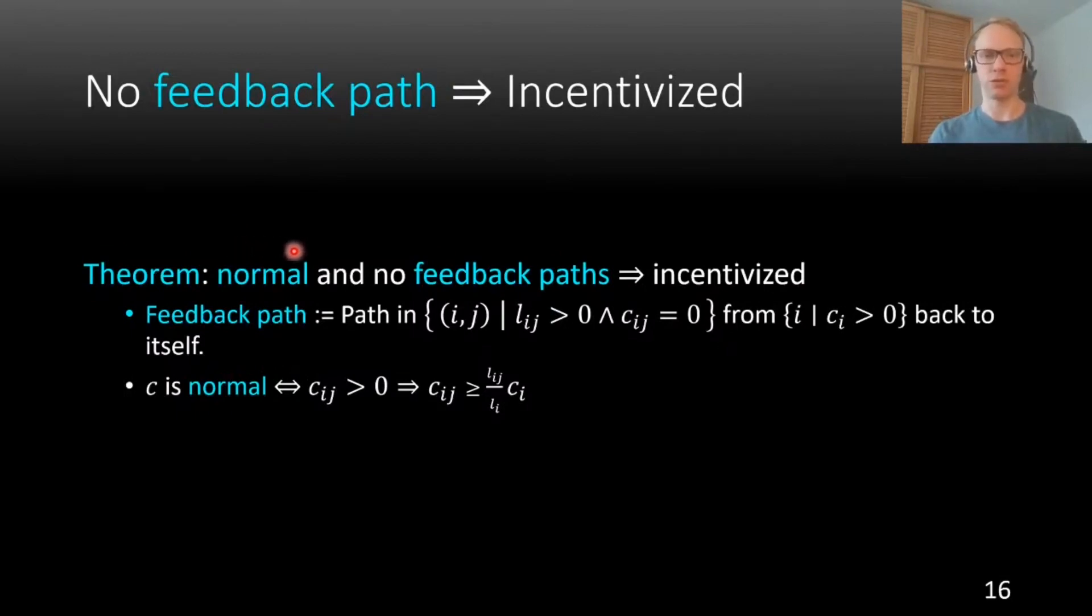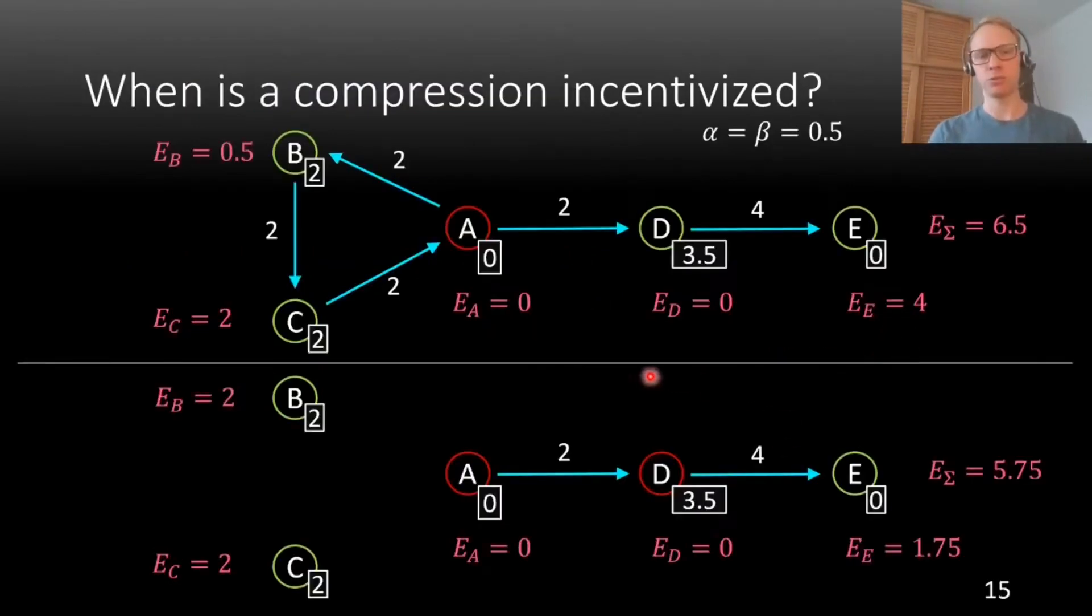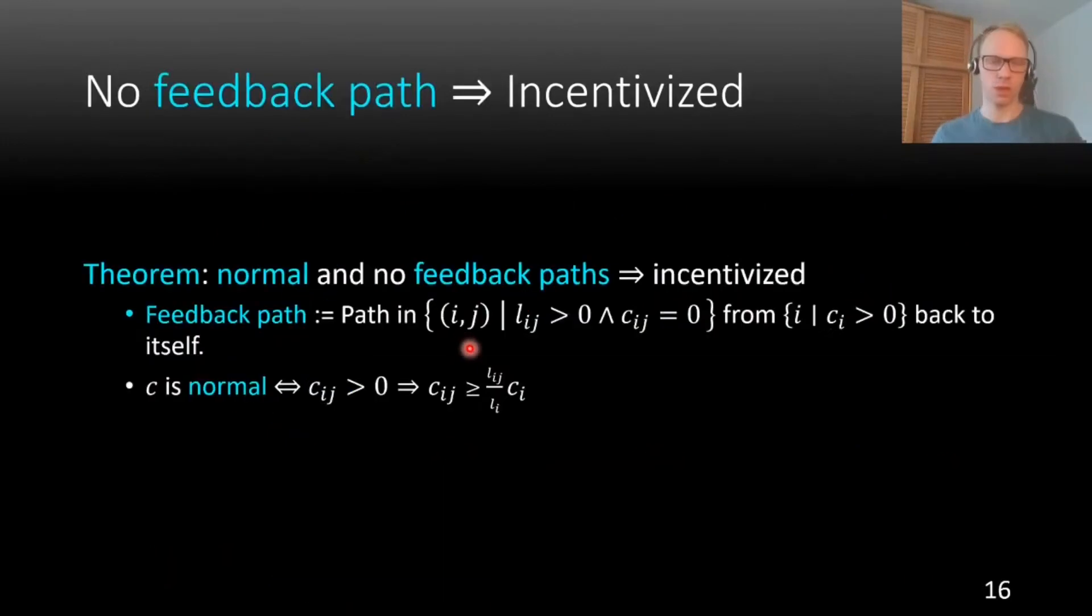And a feedback path is the following structure. A feedback path is a path of liabilities where the compressed amount is zero and that goes from the set of banks involved in the compression back to itself. If we look at our example, we see that no such path is there because the only liabilities that are not compressed are these ones. And the set of involved banks is this one. And, of course, there's no path that goes back from the set to itself.